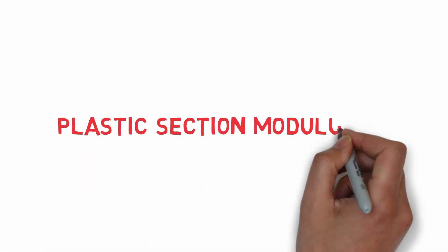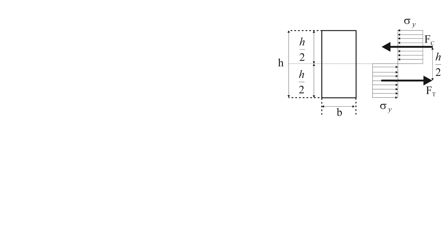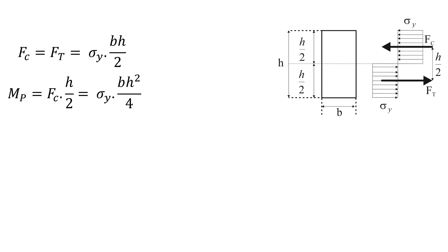Another important section property is the plastic section modulus, denoted Z. For a fully plastic rectangular cross-section, based on the shown stress distribution, the upper portion is under compression and the lower part is under tension. To meet equilibrium conditions, all compressive forces must equal all tension forces. The resultant force for each of the two stress distribution shapes acts through the centroid of each volume. Therefore, Fc equals Ft equals sigma_y times base times height over 2. Fc and Ft are couple forces — equal and opposite. The couple moment of these two forces is the plastic moment Mp, which equals Fc times height over 2, giving sigma_y times base times height squared over 4.